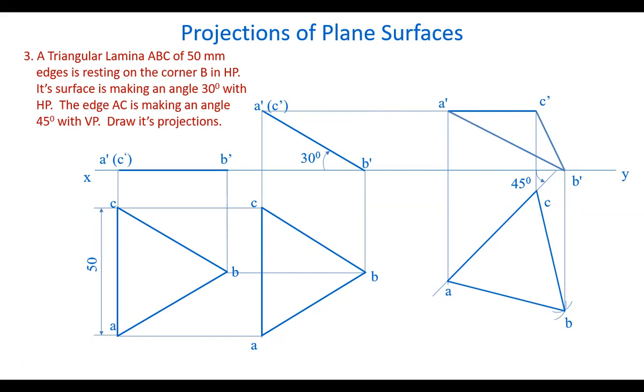This is the way of getting the projections of the plane lamina when its surface is making angle with both the planes. We have satisfied all the given conditions. We will continue drawing projections of plane surfaces when the surface makes angles with both planes. If you have any queries or doubts, please write in the comments, like, share, and subscribe. Thank you.